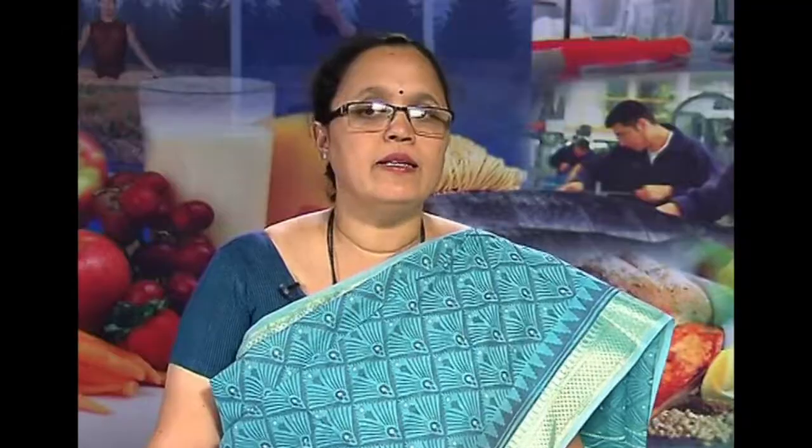Once food reaches the stomach — where it is called chyme — the salivary amylase is neutralized by the HCl present there, and no further carbohydrate digestion takes place. Stomach acid destroys bacteria in the food. After the stomach, chyme enters the duodenum, the beginning of the small intestine. In response, the pancreas releases pancreatic amylase, which hydrolyzes starch to alpha-dextrins. These are then digested by glucoamylase and alpha-dextrinase to maltose and maltotriose.